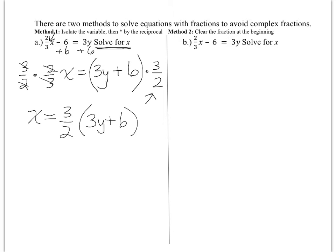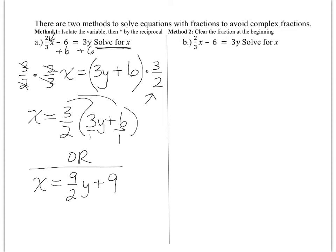If you wanted to, you could distribute the 3 over 2. That would give you x equals 9 over 2 times y plus 9, since 3 over 2 times 3 over 1 is 9 over 2y, and 3 over 2 times 6 over 1 simplifies to 9 because the 2 goes into 6 three times, giving 3 times 3 equals 9.